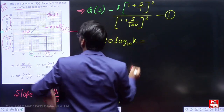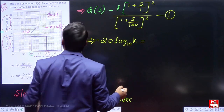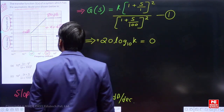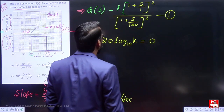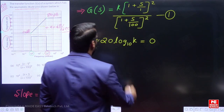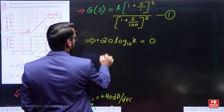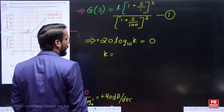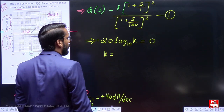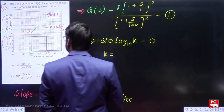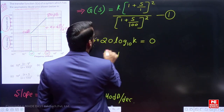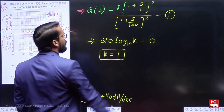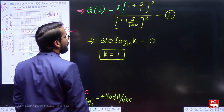The initial magnitude before the first corner frequency is equal to 20·log₁₀(K), and as already given, this is 0 dB. From this equation we can get the value of K. The value of K will be equal to 1.